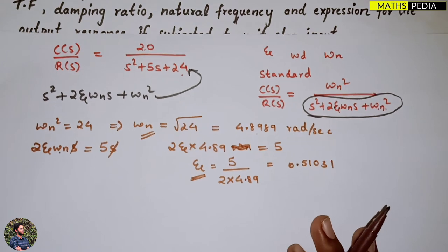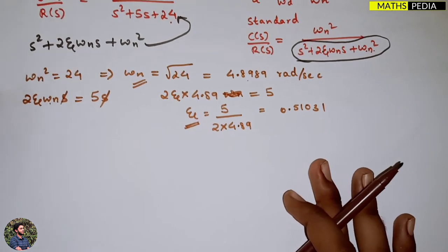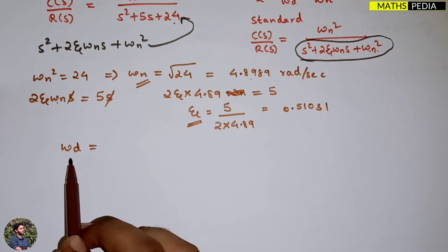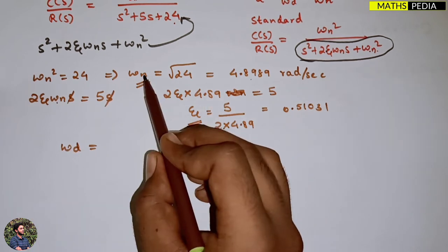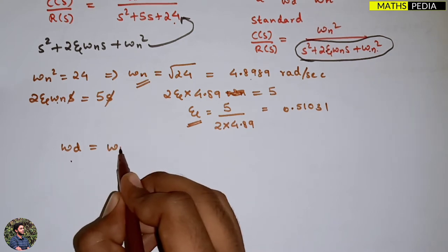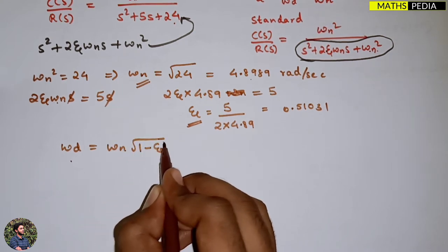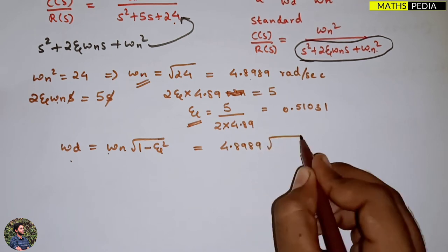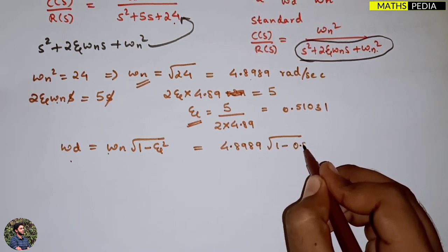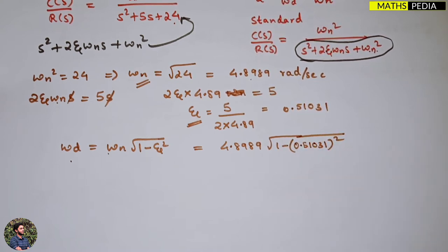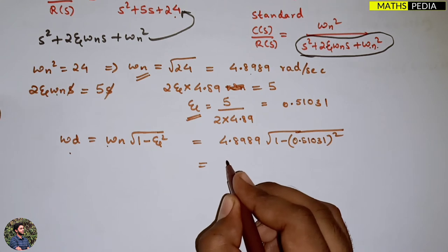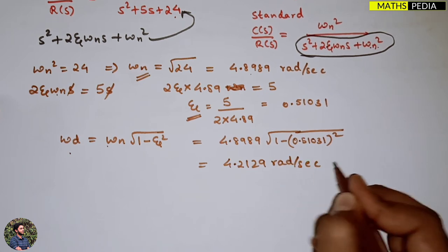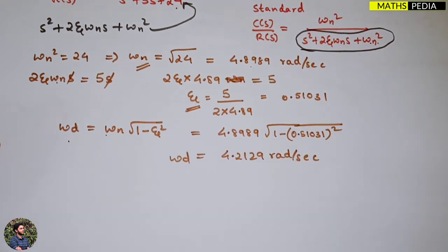Now we need to find ωd, the damped frequency of oscillations, in order to write the output response. ωd = ωn × √(1−ζ²) = 4.8989 × √(1−0.51031²), which equals approximately 4.2129 radians per second.